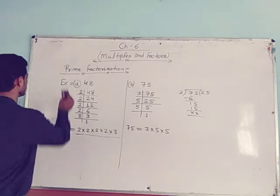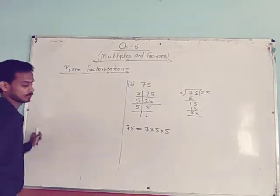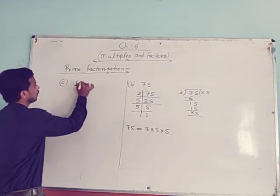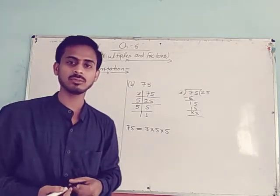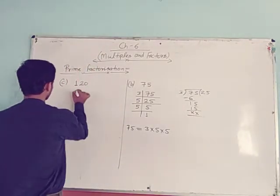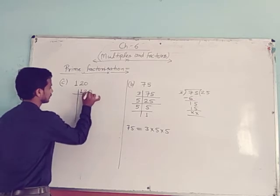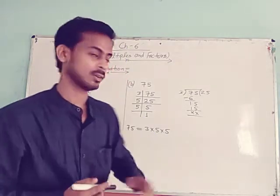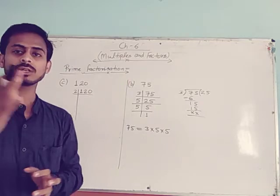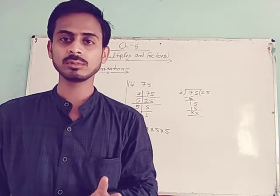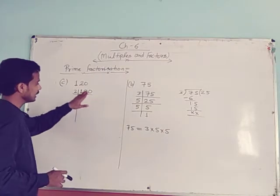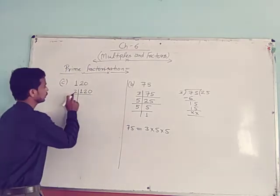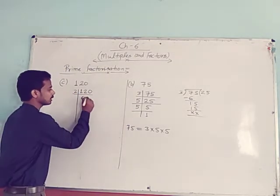See one more example: 120. Find the prime factorization of 120. If the last digit or the ones digit is 2, 4, 6, 8, or 0, it means the number is divisible by 2. So 120 is divisible by 2. When you divide 120 by 2, you get 60.